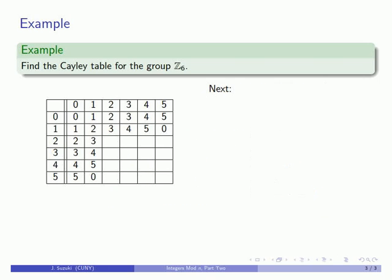So we can add 2. 2 plus 2 is 4, 2 plus 3 is 5, 2 plus 4 is 6, which is congruent to 0 again.